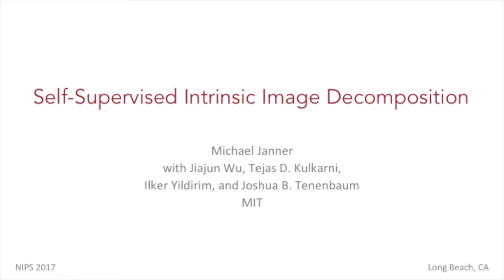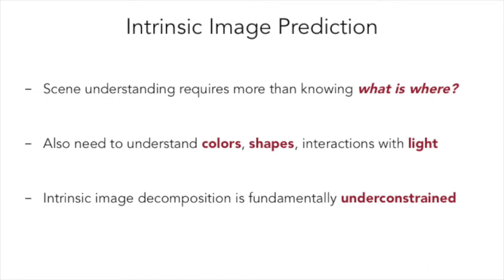There's been an enormous amount of progress recently on object localization and classification, but the general problem of scene understanding will also require knowledge about objects' colors, their shapes, and how they interact with light. This sort of description is known as a set of intrinsic images, and finding an object's intrinsic images is difficult because the problem is fundamentally under-constrained.